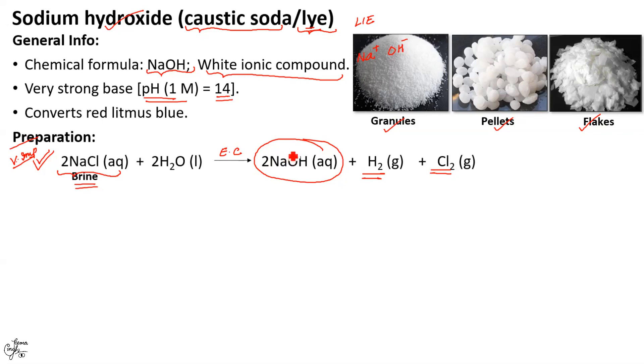So sodium hydroxide is the main product whereas hydrogen and chlorine are known as byproducts as they are formed along with the main products. Now hydrogen is produced at cathode whereas chlorine is released at the anode and sodium hydroxide is obtained near cathode.